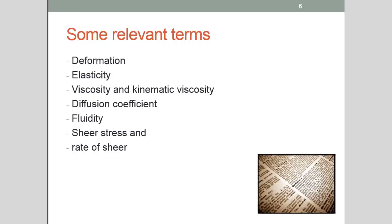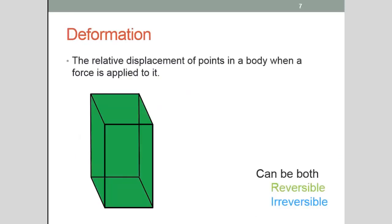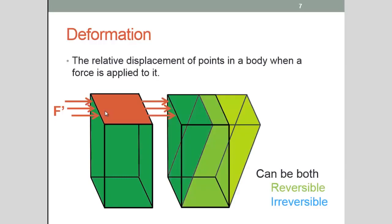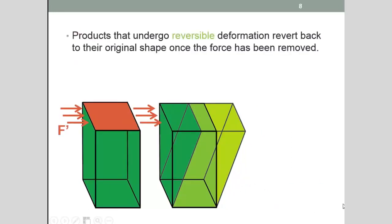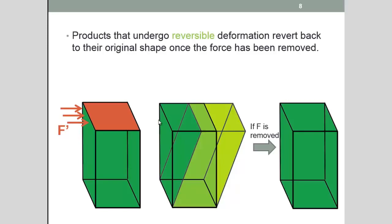We'll start with deformation. Deformation is defined as the relative displacement of points in the body when a force is applied to it. So take this block for instance. If a force is applied to the top plane here then the block will be deformed. This deformation can be both reversible and irreversible. Products that undergo reversible deformation will revert back to the original shape once the force has been removed. So let's remove this force here and you'll see that the block has reverted back to its original shape.